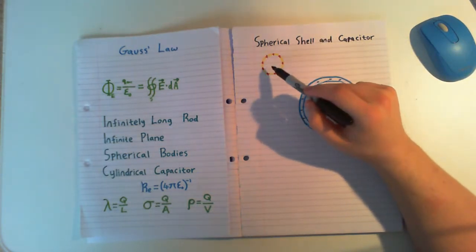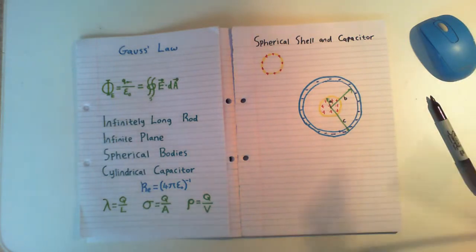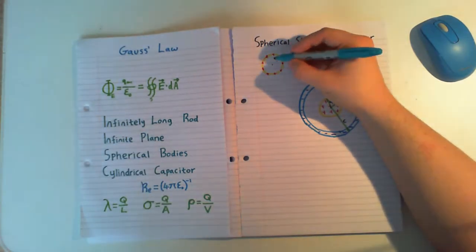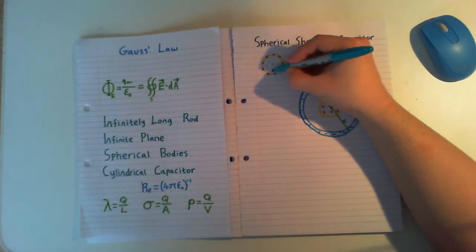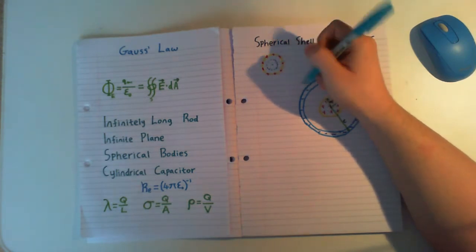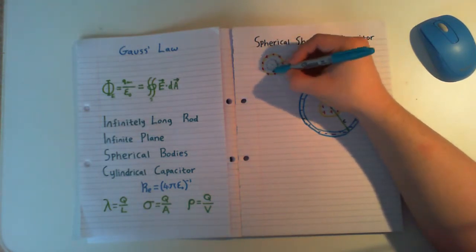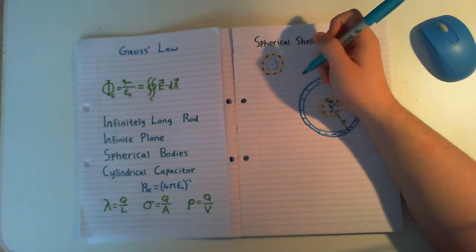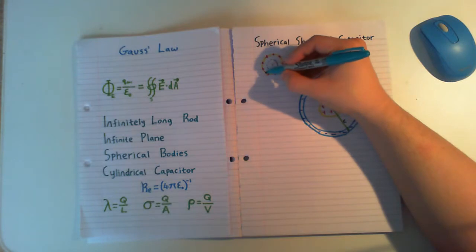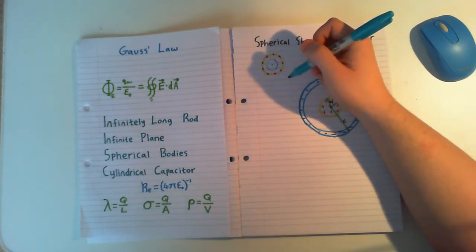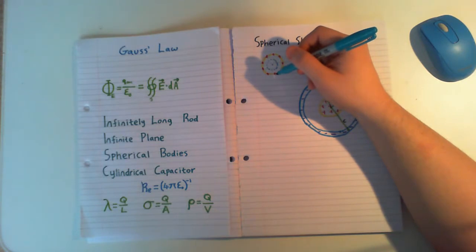And we found that for all three, when we got outside of the sphere, it was just exactly the same as a point charge, as you'd expect. If you went infinitely far away from it, it would just be an infinitesimally small, tiny point charge to you. So you expect the electric field to be the same.